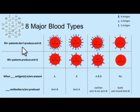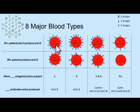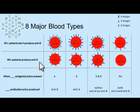Rh positive patients will not produce anti-D in their plasma. When the D antigen is present, they will not produce an antibody against it. So we can have A positive, B positive, AB positive, and O positive. Or individuals can lack the D antigen, and because of this, they will produce antibodies against an antigen they don't have. So we can have A negative, B negative, AB negative, or O negative red cells.